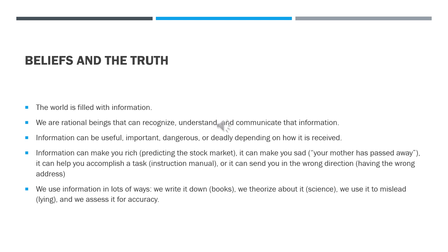Information can make you rich if you're able to predict the stock market, for example, or can make you sad if you find out that your mother has passed away. It can help you accomplish a task if you have the information of an instruction manual, and it can also send you in the wrong direction if you have bad information — like the wrong address. We use information in lots of different ways.